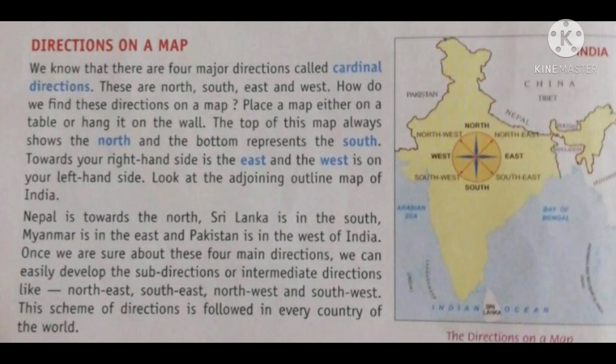How do we find these directions on a map? Place a map either on a table or hang it on the wall. The top of this map always shows the North and the bottom represents the South. Towards your right hand side is the East and the West is on your left hand side.